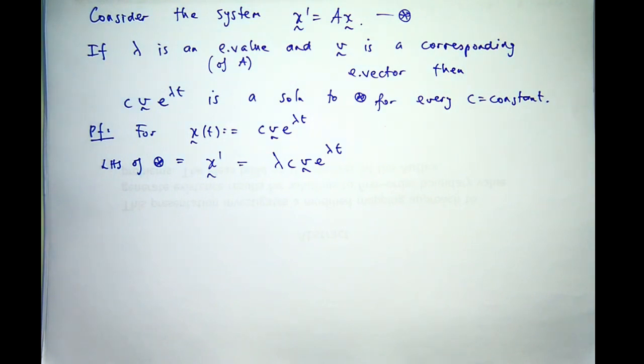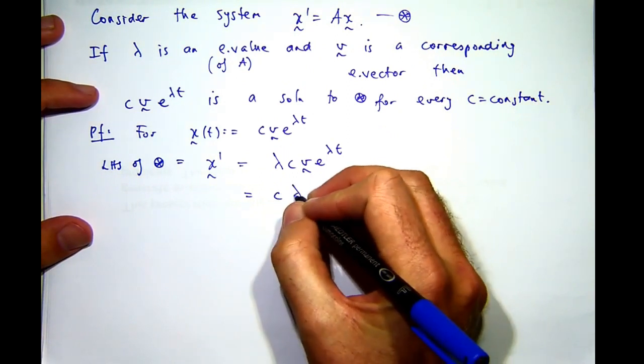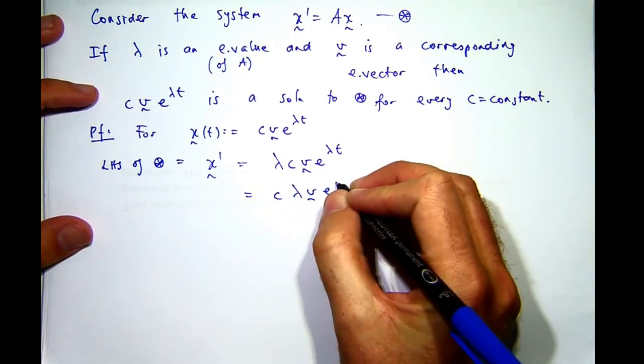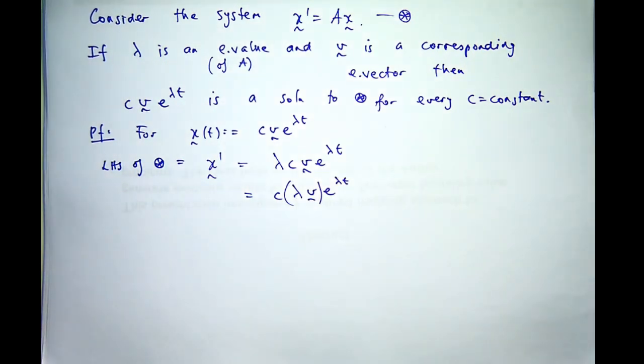Now what we can do is rearrange that and try to get the right-hand side of star. So let me just rearrange it a little bit. Now if I put in those brackets in the bottom line,